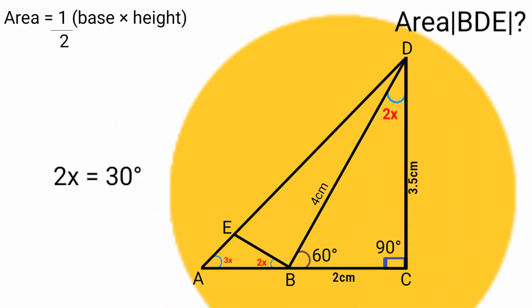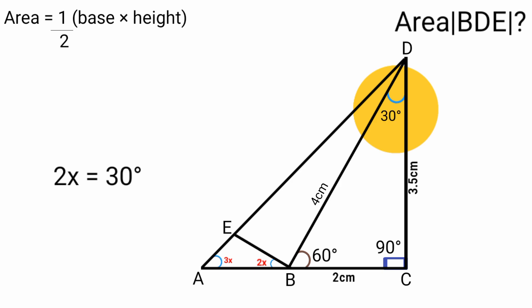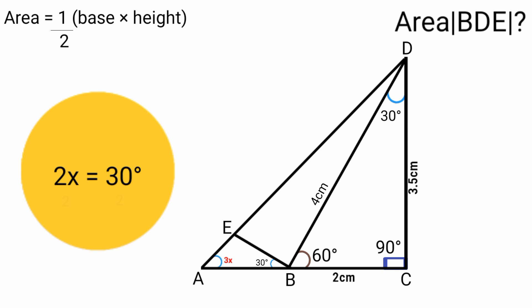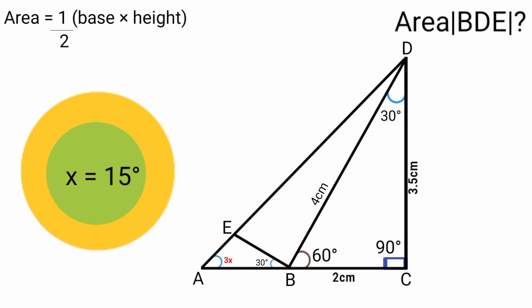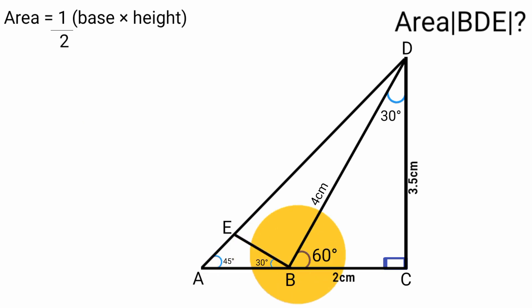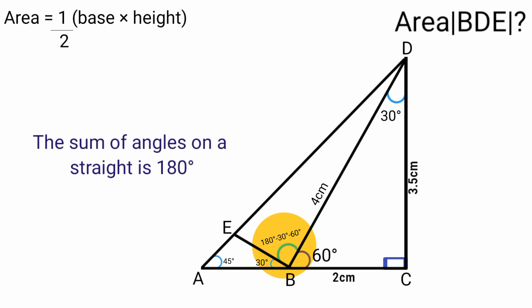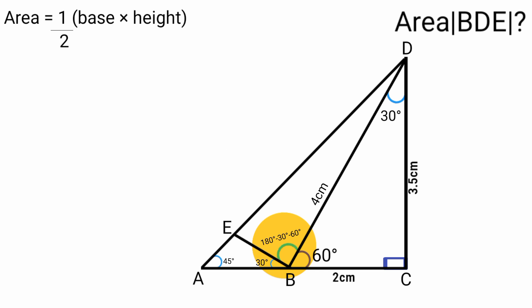From 2x = 30 degrees, we divide both sides by 2 to get x = 15 degrees. Substituting back, 3x = 3 × 15 = 45 degrees. Now, since this angle is 30 degrees and this angle is 60 degrees, the angle at this point on the straight line must equal 180 − 30 − 60 = 90 degrees, because the sum of angles on a straight line is 180 degrees.